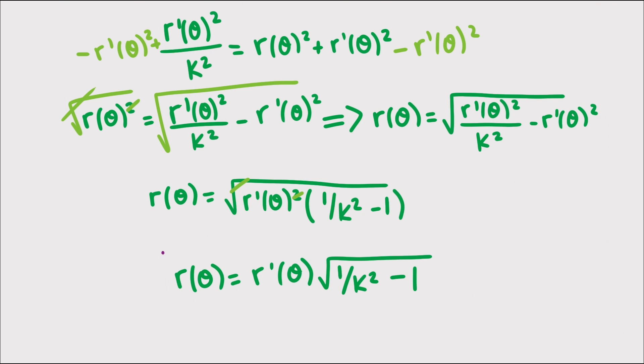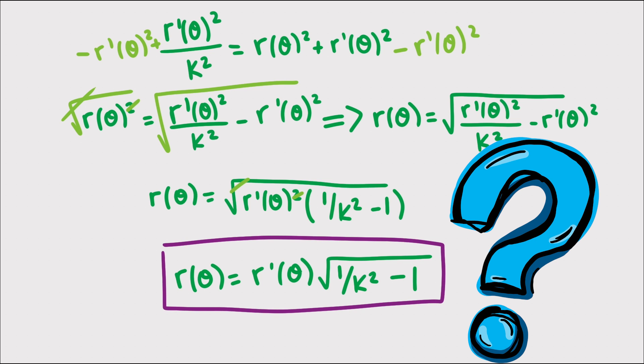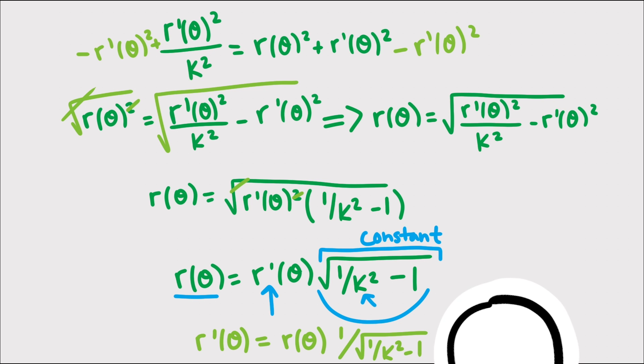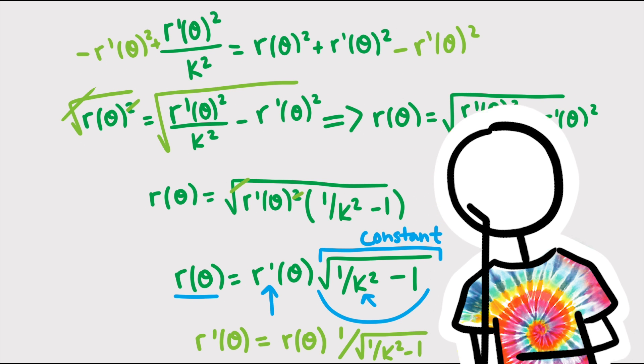Eventually we do end up with r of theta isolated, but how do we make sense of this? We have that r of theta is equal to this expression times the derivative of r of theta. This expression is just a constant since k is a constant. So we have a function that is a multiple of its derivative. Or, said another way, the derivative is a constant multiple of the function. What functions do we know of where the derivative is a constant multiple of the original function?